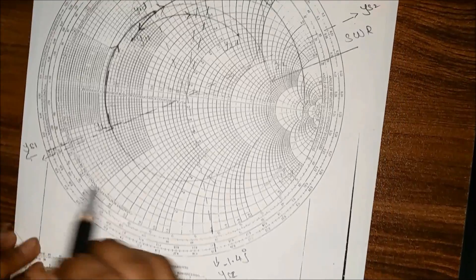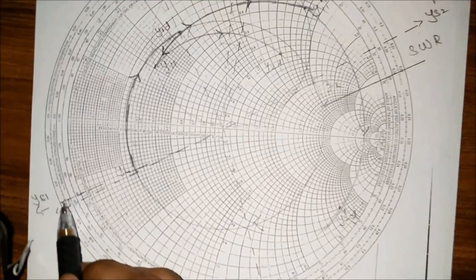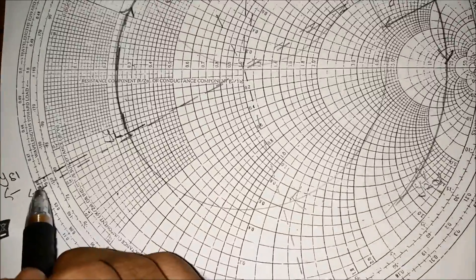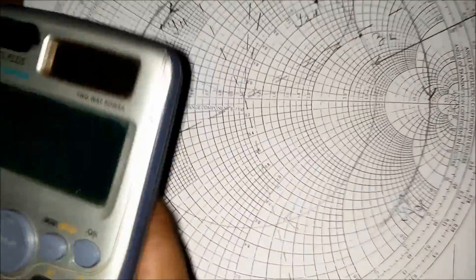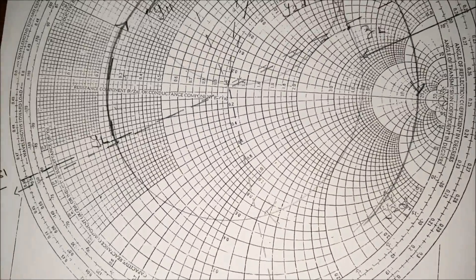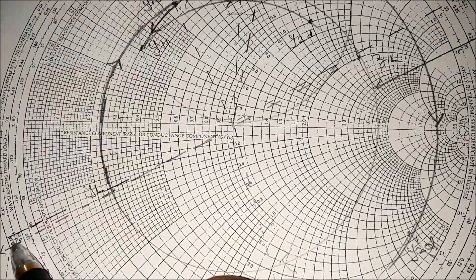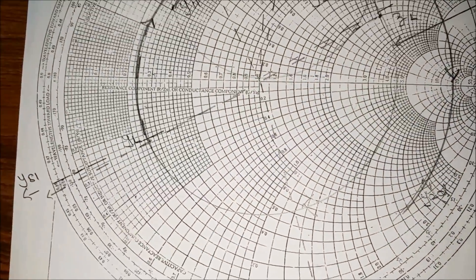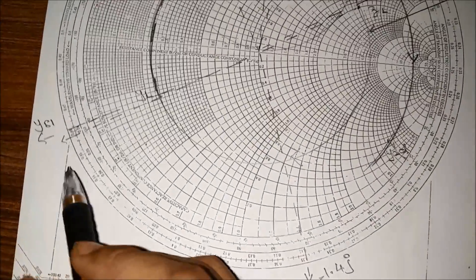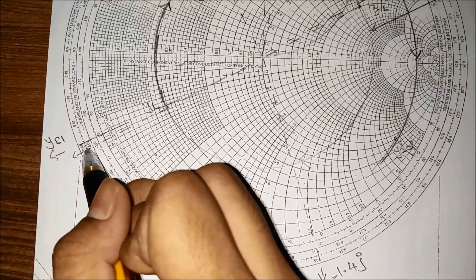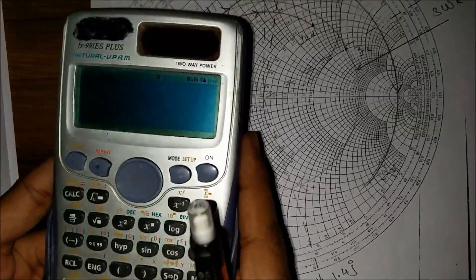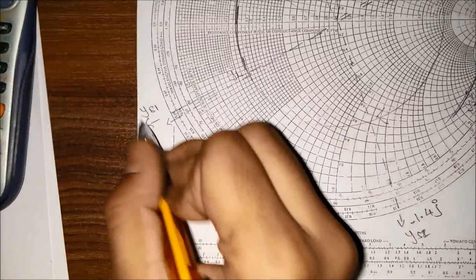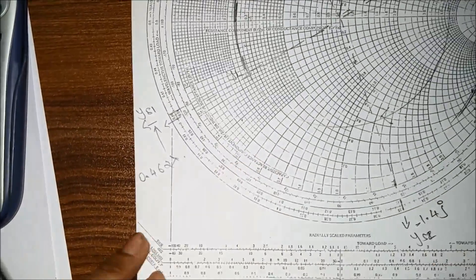Now we calculate the respective wavelength values. ys1 wavelength value is somewhere at 0.46 and some value. We need to calculate the wavelength difference. It's somewhere 0.46 plus one division, so I calculated 0.46 plus 1 times 0.002 equals 0.462 lambda. This value is 0.462 lambda.